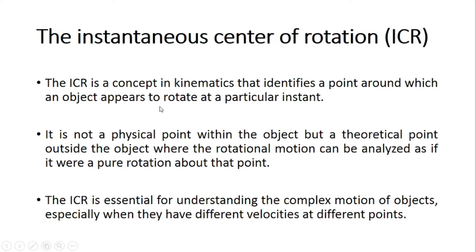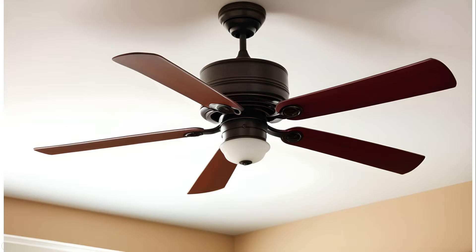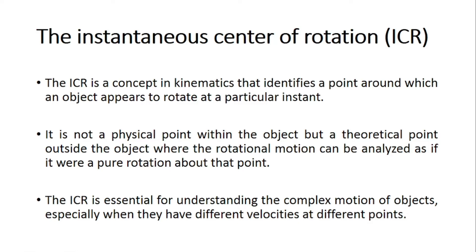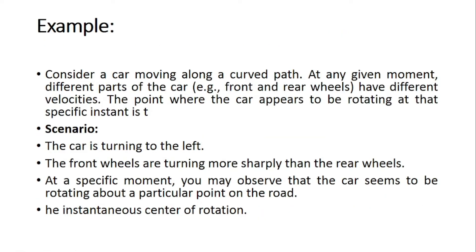The ICR is a concept in kinematics that identifies a point around which the object appears to rotate at a particular instant. ICR represents instantaneous center of rotation. For a fan, it rotates in circular motion and its center is always fixed, but for some mechanisms it is impossible to find a fixed center — it keeps changing along its motion. The ICR is not a physical point within the object but a theoretical point outside the object where the rotational motion can be analyzed as if it were pure rotation about that point. The ICR is essential for understanding the complex motion of objects, especially when they have different velocities at different points.